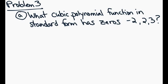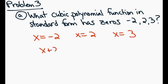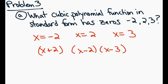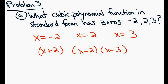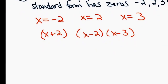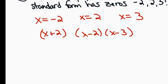Using the factor theorem, in problem 3 we want to determine what cubic polynomial function in standard form has the zeros negative 2, 2, and 3. These are the solutions, which means these are the factors: x plus 2, x minus 2, and x minus 3. But if I want to write this in standard form, I'm going to have to multiply this out. The algebra is long but not difficult — it's algebra we've done, just lengthy. You cannot multiply all three of them together at the same time; you can only multiply two at a time.